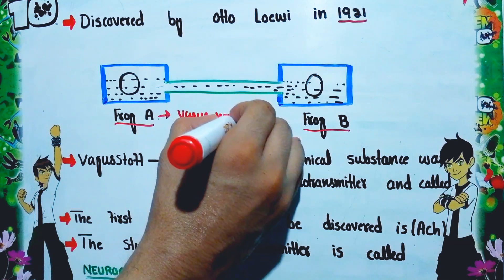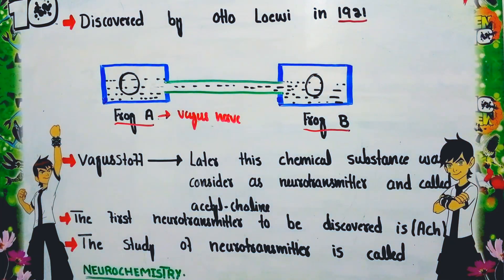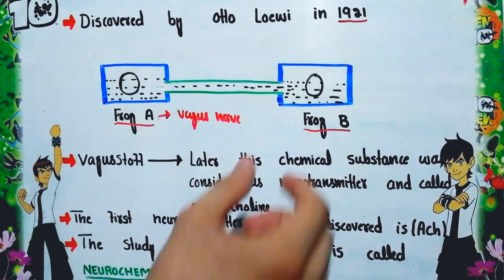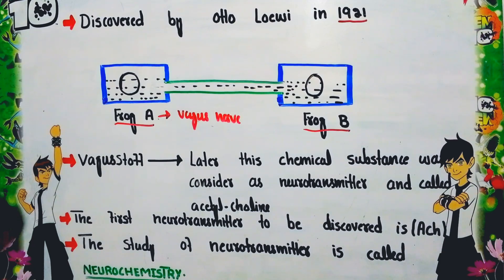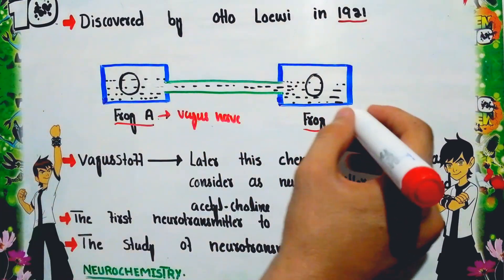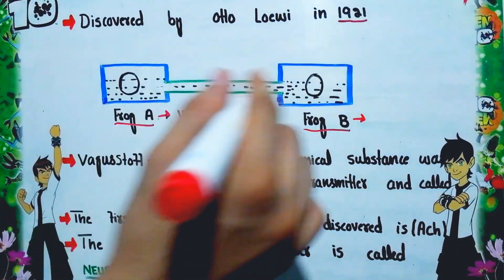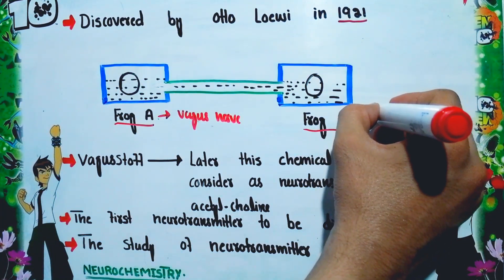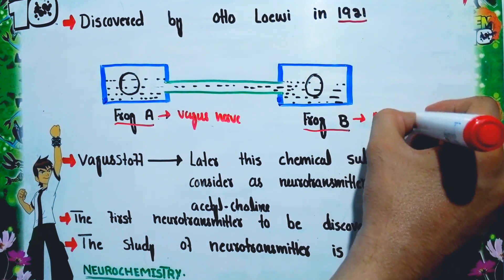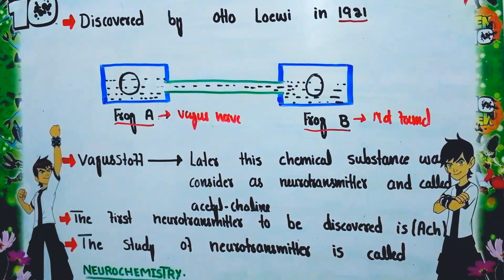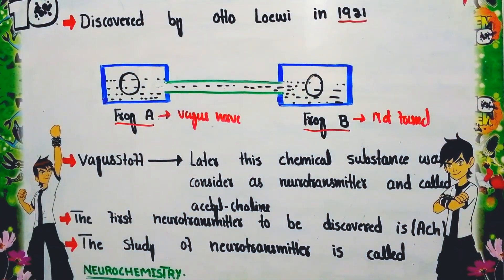Frog A had a vagus nerve connected with its heart and was placed in a saline-filled chamber. Frog B was denervated — meaning the connection between the vagus nerve and heart was lost; the vagus nerve was not present in Frog B — and it was placed in another saline-filled chamber.